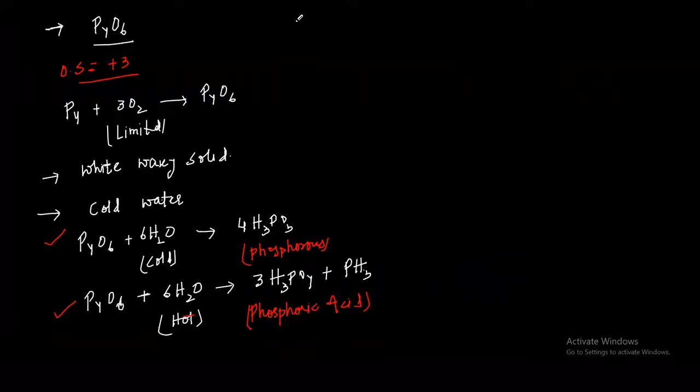Second one: phosphorus tetraoxide, P4O8. Oxidation state of phosphorus is plus four. To get this, P4O6 is heated in absence of air around 200 or 210 degrees Celsius. We get three P4O8 plus phosphorus red.